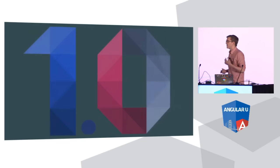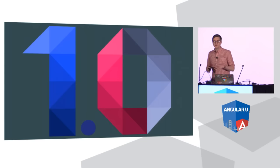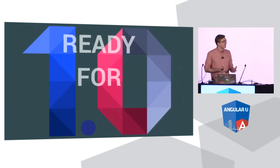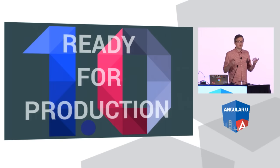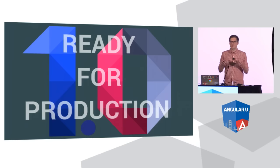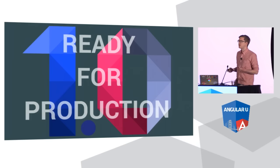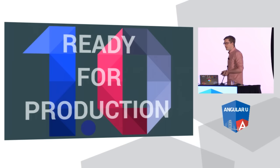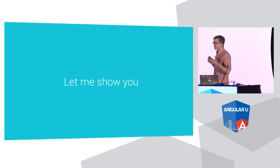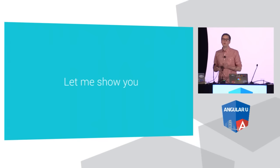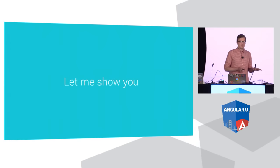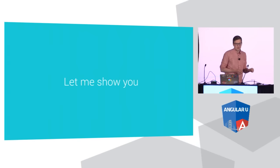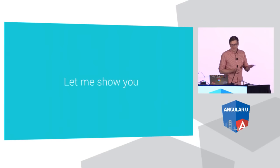At this point, we're feeling like Polymer is 1.0 — we feel like it's ready for production, and we want people to start building things with it. Within Google, a bunch of teams have started building really big projects using it. Rather than just talk about it, let me actually show you what it looks like to build something in Polymer 1.0.